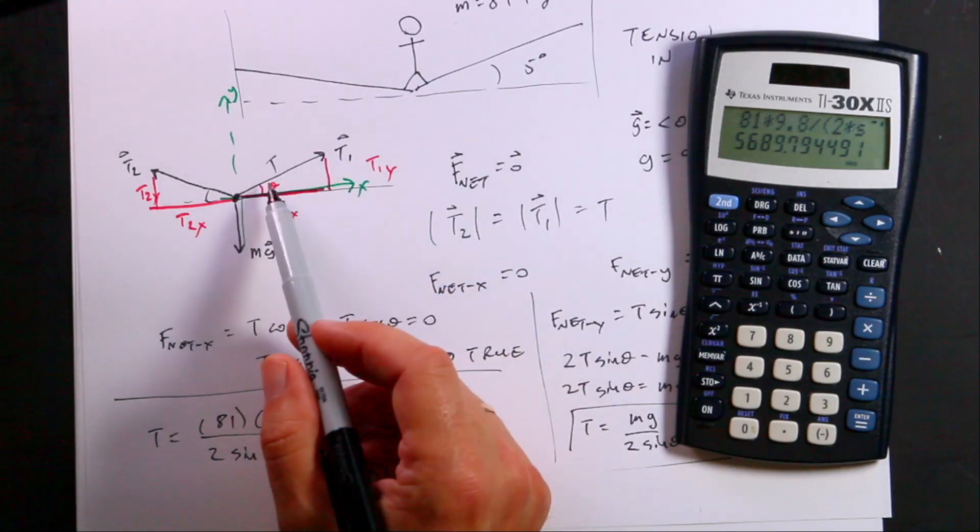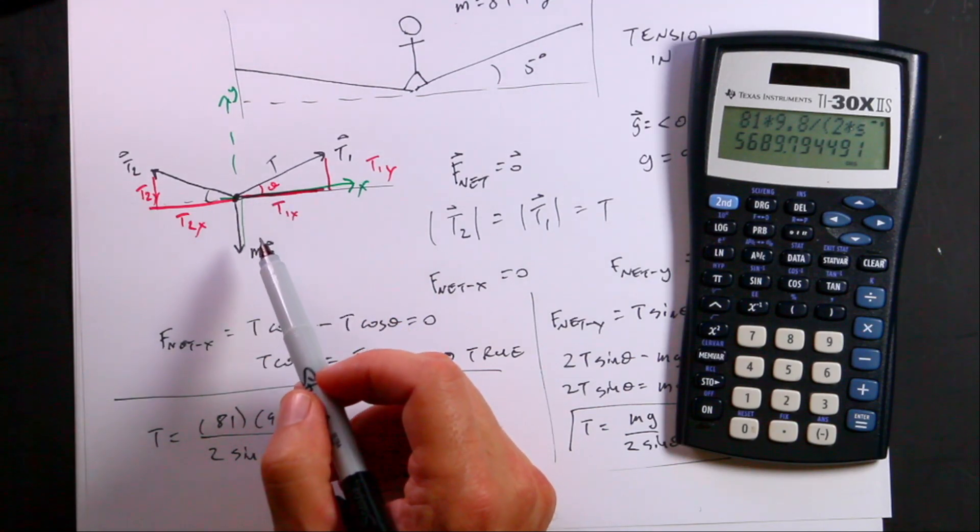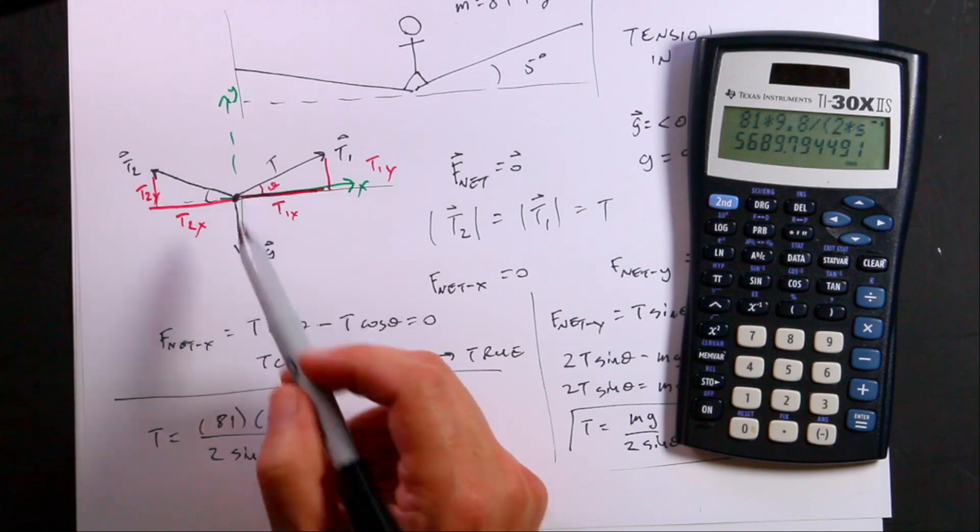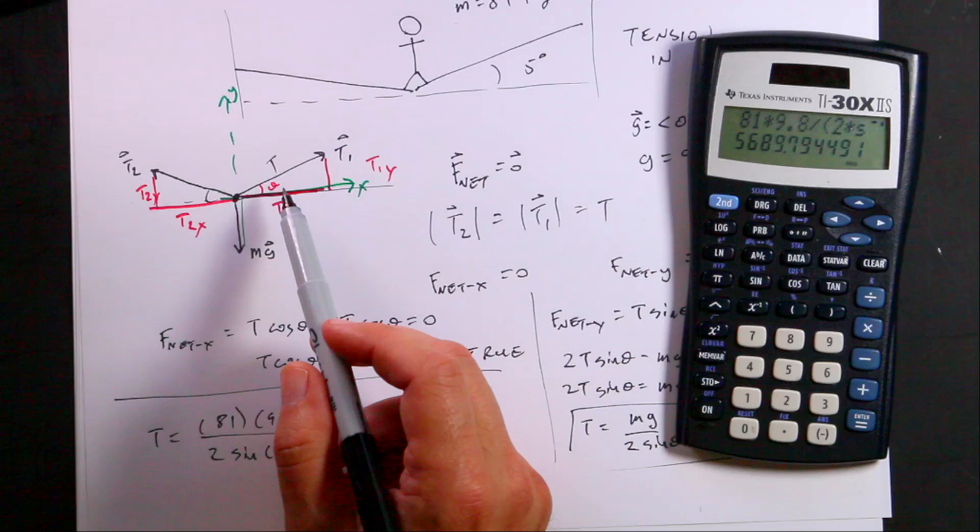If it's completely straight, then there's going to be no vertical component of the tension. And so then it won't balance out this gravitational force. There's no way for the force to add up to zero if there's not a Y component of the tensions. Can it be really, really small? Yes. It can be really, really small. But it can't be zero.